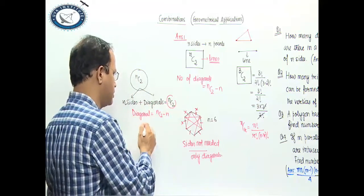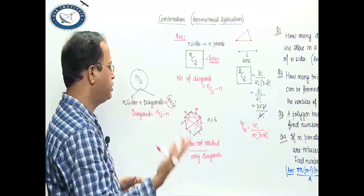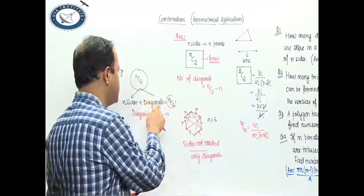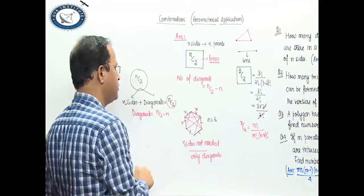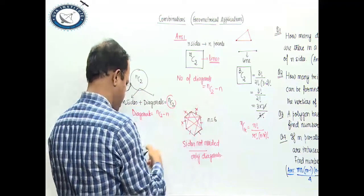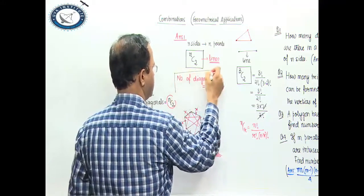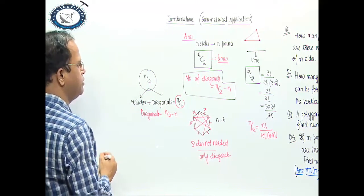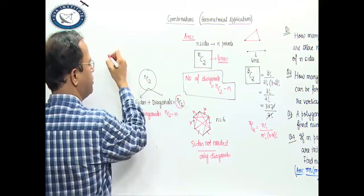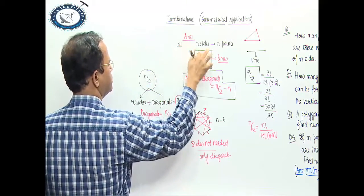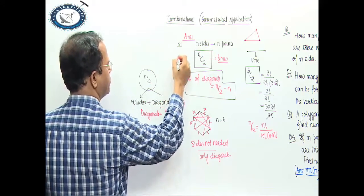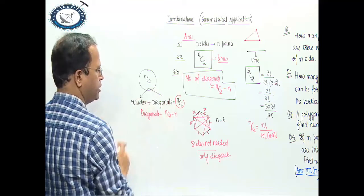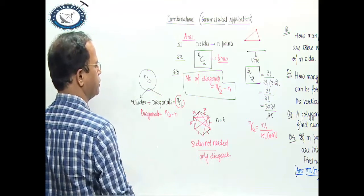When you talk about diagonals, the number of diagonals means we are talking about nC2 minus sides. But nC2 mein to har cheez include hai — so number of diagonals is nC2 minus n sides. Because sides hain, to unhe minus kar denge. Step number 1: n sides ka matlab end points. Number of lines possible is nC2. Number of diagonals: then nC2 minus n, because only diagonals we are talking about.